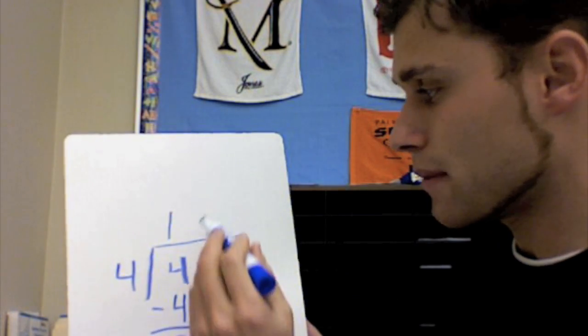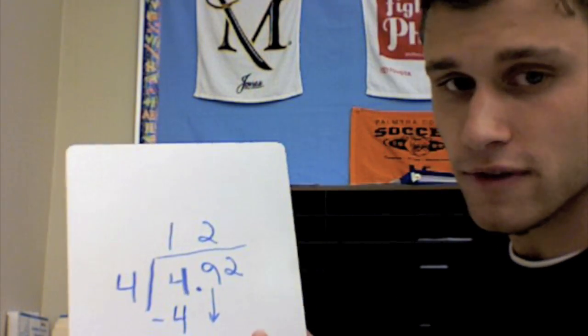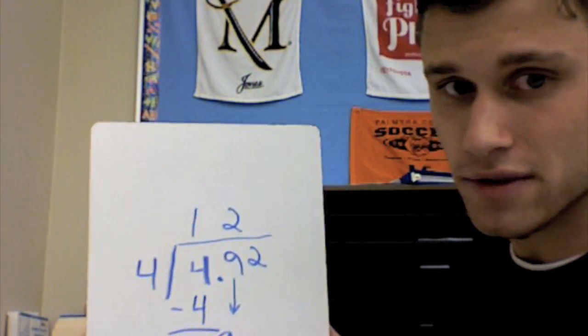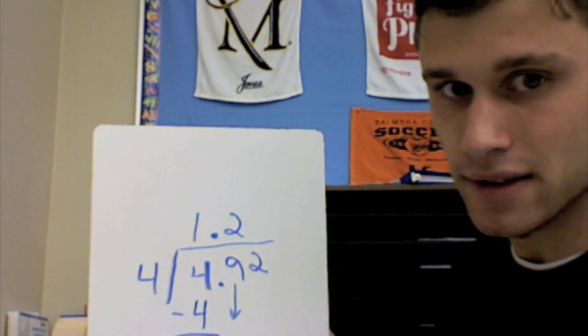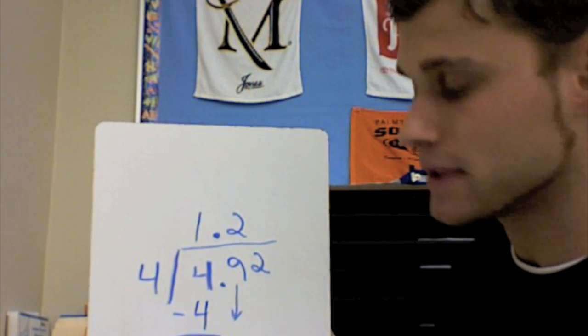4 goes into 9 how many times? Twice. Now, before I go any further, you must remember, you take the decimal in the house, bring it straight up into your answer. You always bring the decimal straight up into your answer.